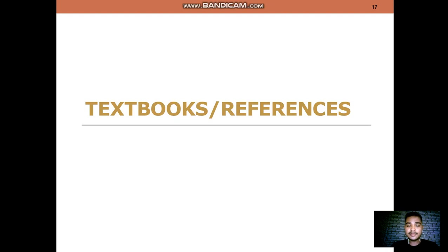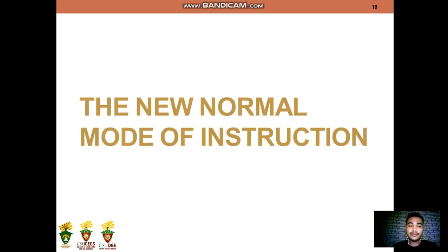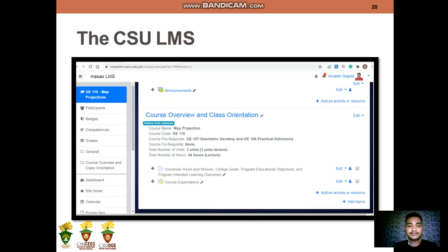Now I'm going to give you the list of textbooks and references. We have NAMRIA 2007, DNR 1998 or DAW 1998-12, and the Bureau of Lands 1975 Technical Bulletin No. 26. I assumed that all of you are oriented about the CSU Learning Management System or CSU LMS. Below is a screenshot of our subject, GE115 Map Projection, in the Moodle LMS.